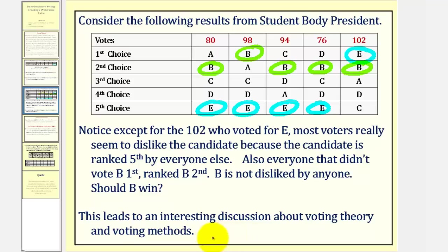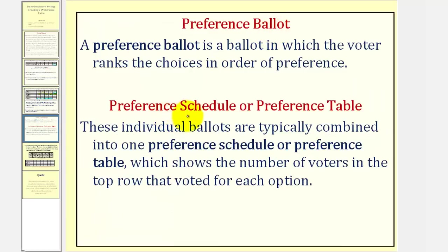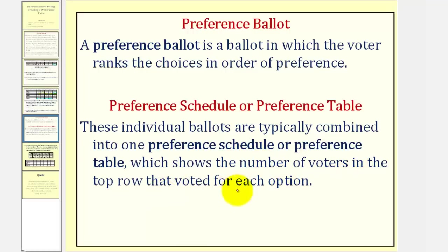In this series of videos, we'll be discussing various voting methods. But for this introductory video, let's begin by defining a preference ballot and a preference schedule or preference table. A preference ballot is a ballot in which the voters rank the choices in order of preference. A preference schedule or table is when these individual ballots are combined into one preference schedule or table, which shows the number of voters in the top row that voted for each option.